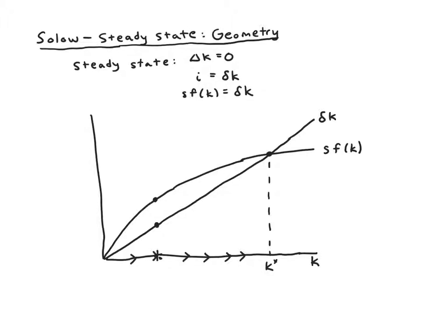If we started with a lot of capital per worker, we'd have a really big amount of depreciation and a relatively small amount of investment. It's still a lot of investment because we have a lot of capital, so we can produce a lot of output, save it, and invest it. But it's less than the depreciation. So the capital per worker would tend to go down over time. That's going to be true as long as we're to the right of the steady state—depreciation will exceed investment, so we'll be losing more capital than we can replace.